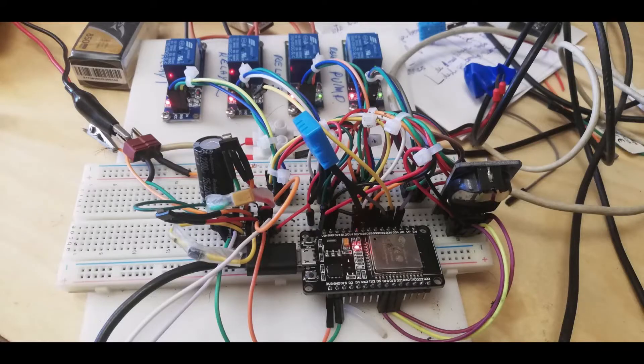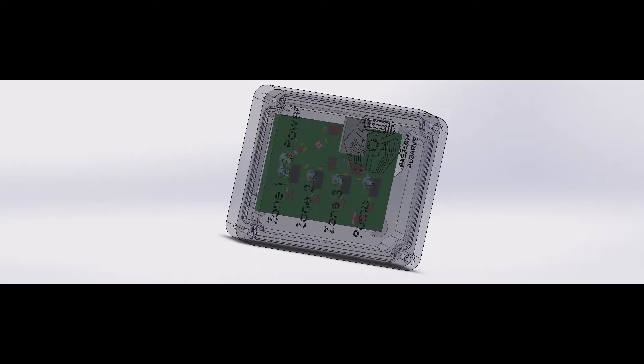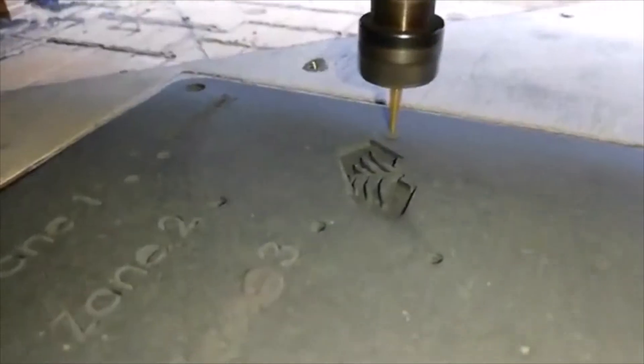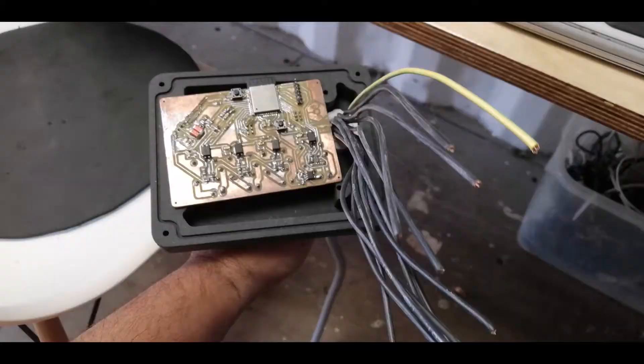What you see now is an irrigation controller, but it really can control anything with a relay. With the schedule, I can set the times for it to turn on and off. I'll show you this.